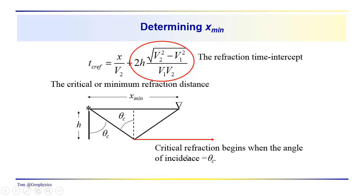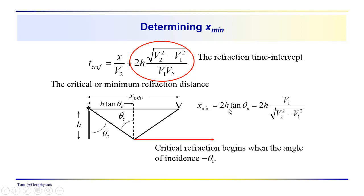x-min was shown to equal h times the tangent of theta critical — that is, the side opposite over the side adjacent — and the total distance x-min is twice that: 2h times the tangent of theta critical. Using our trigonometric identities, this equals 2h times v1 over the square root of v2 squared minus v1 squared.